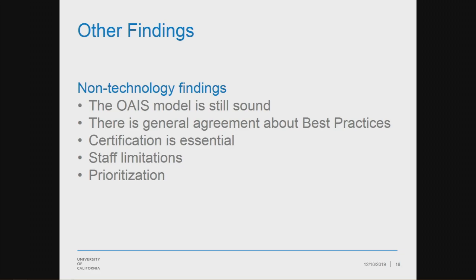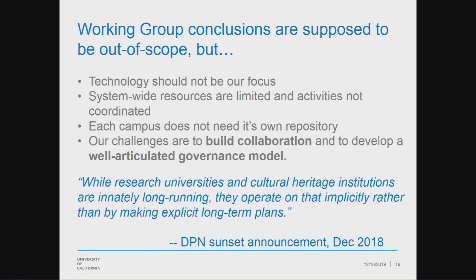Many campuses frankly aren't interested in building their own preservation system, and that's okay — they're expensive and the ROI is difficult to quantify. Instead, we're seeing resources being directed to DAM development. Our working group was supposed to survey and identify gaps without drawing conclusions, but we couldn't help it. The bottom line: technology should not be our focus. The gaps we need to address are in procedures, policies, and workflows. System-wide resources are limited and not coordinated. UC's best path is not going to lie with 11 separate certified repositories. Our challenge is to develop a well-articulated governance model for system-wide digital preservation services. The path to success at the UC level is not to centralize, but rather to collaborate.